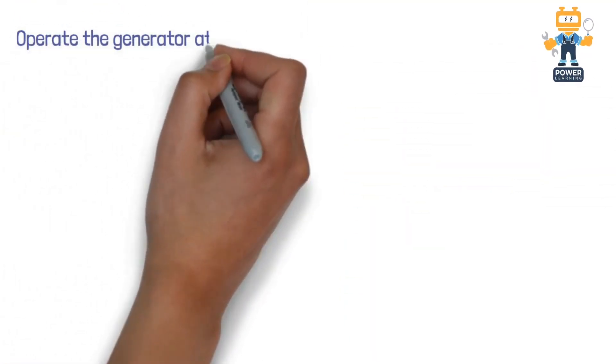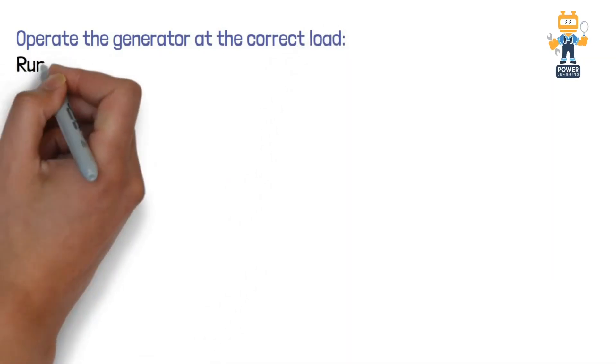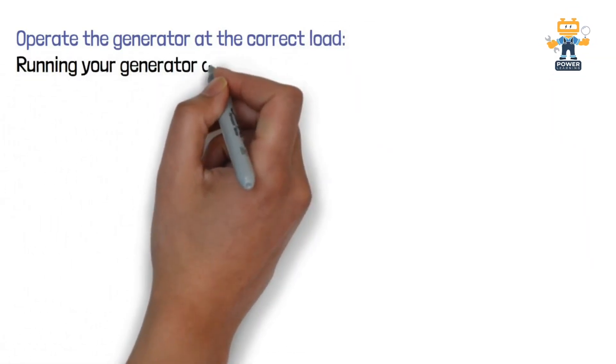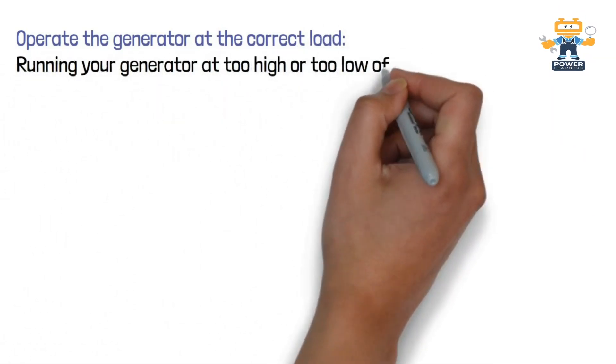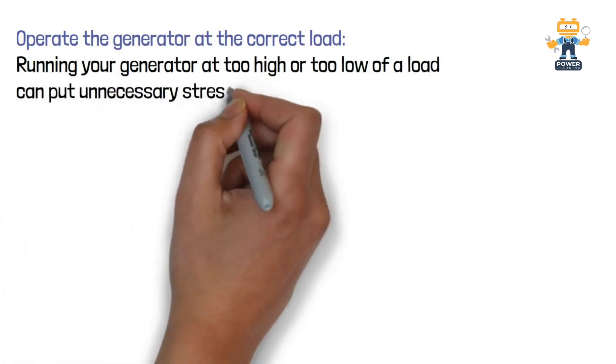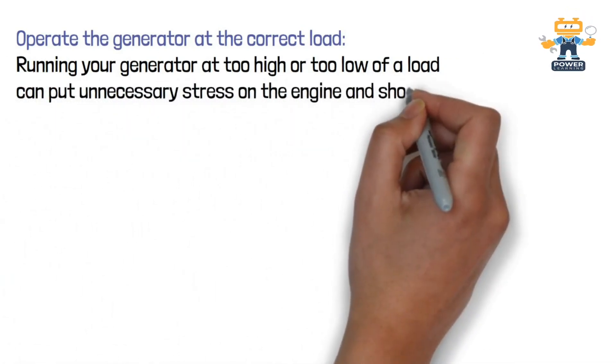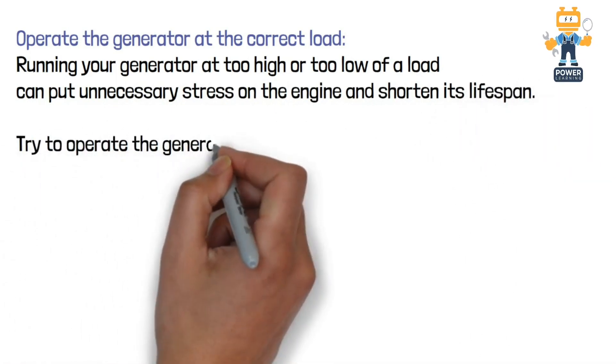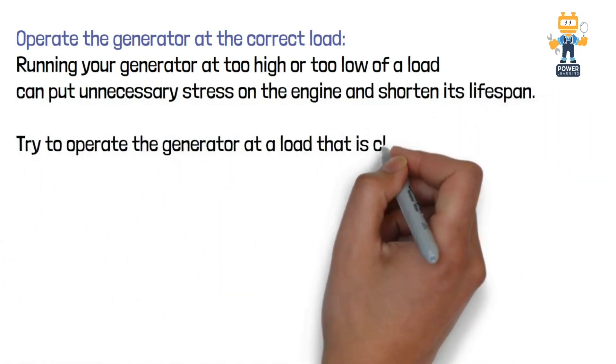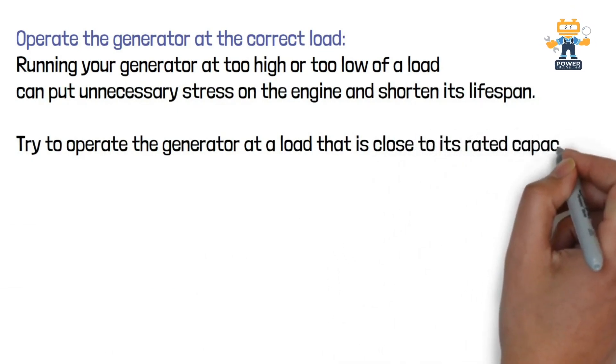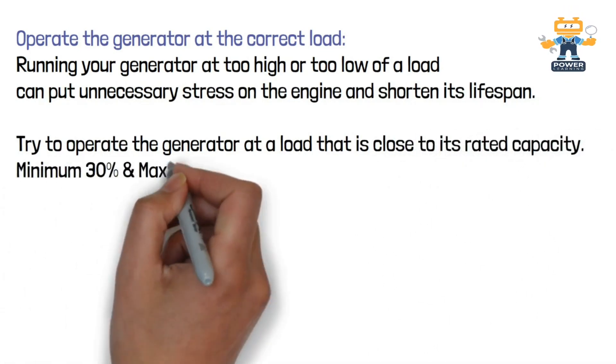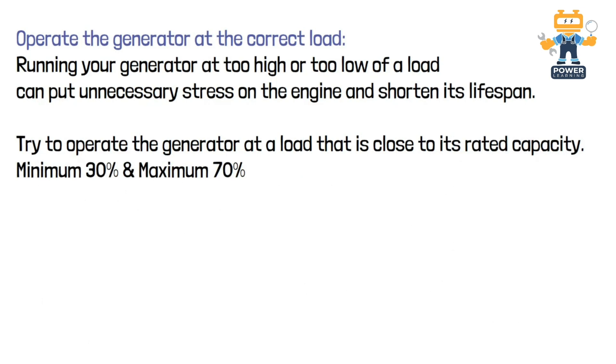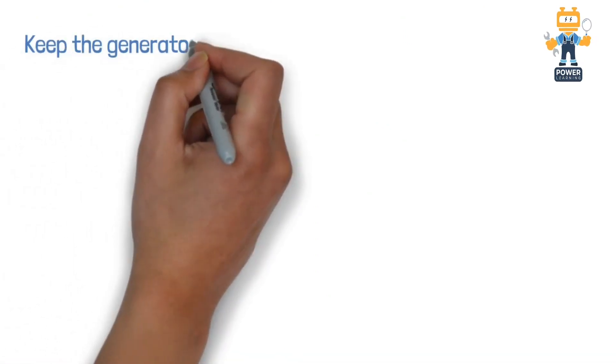The next point is: operate the generator at the correct load. If you run your generator at too high or too low a load, you can put unnecessary stress on the engine and shorten its lifespan. Always balance the load and operate the generator at its rated power. Try to operate the generator at a load that is close to its rated capacity—minimum 30% and maximum 70%. This is the ideal load for diesel generator operation.